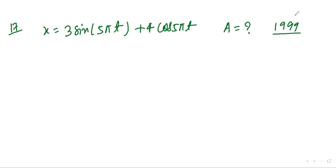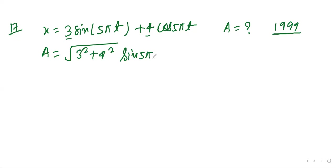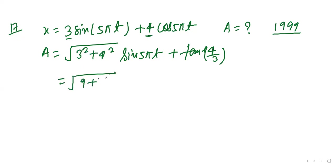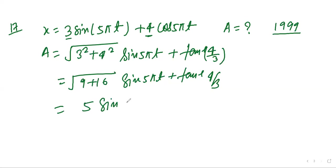The amplitude is calculated as the square root of the sum of squares of the coefficients: √(3² + 4²) = √(9 + 16) = √25 = 5. The resultant expression becomes 5 sin(5πt + tan⁻¹(4/3)).